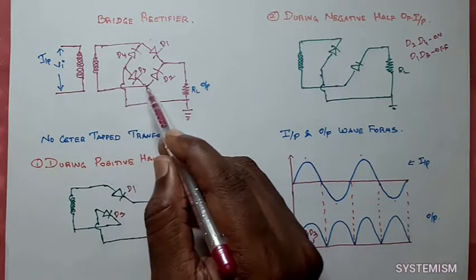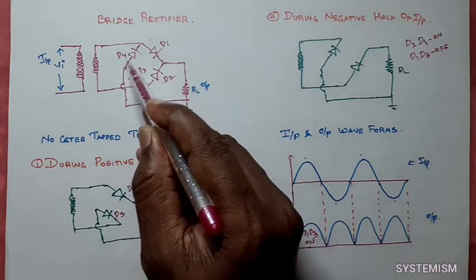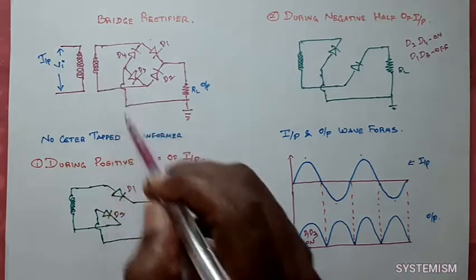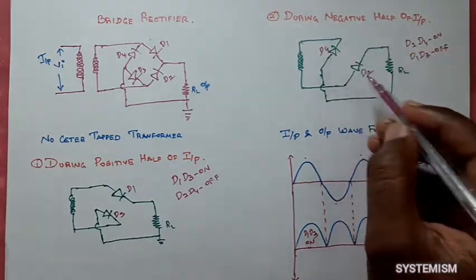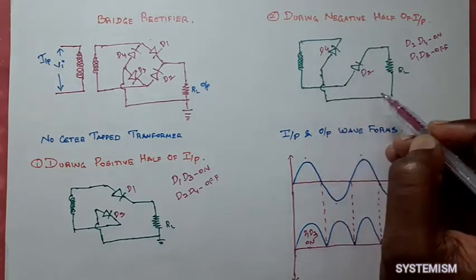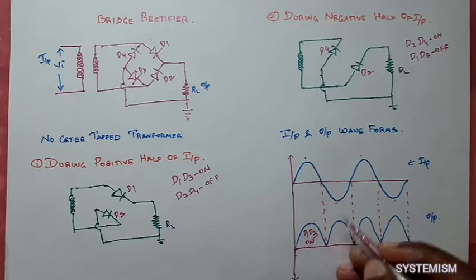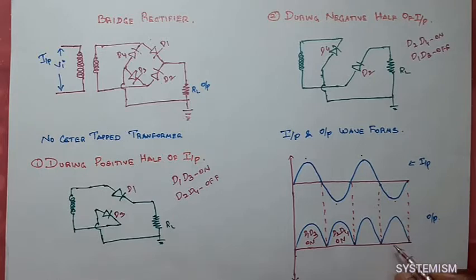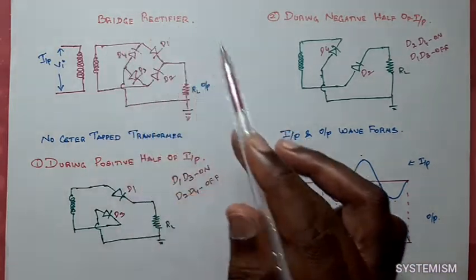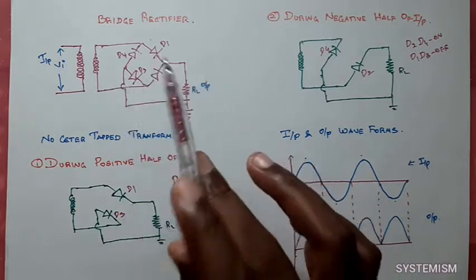The current will flow through this area. Diode D2 is in ON condition, so it will move in this direction and move through this resistor, then comes in this direction, goes through this direction, and moves through diode D4, getting coupled with the total circuit closed. Only these two diodes D2 and D4 are in ON condition during negative half cycle — that is why your circuit gets closed and you are getting your output. This is D1 and D3 ON for positive half cycle and D2 and D4 ON for negative half cycle.